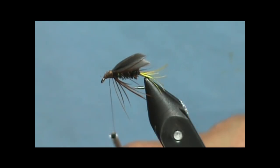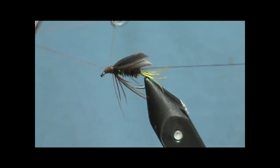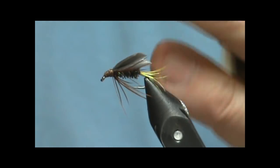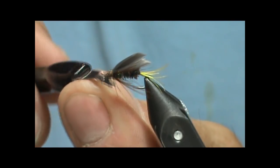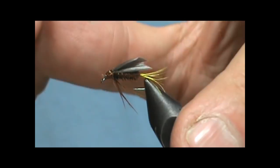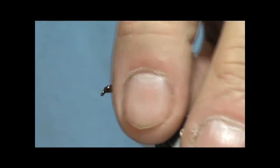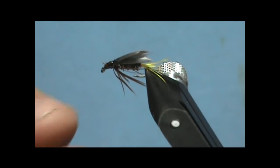Take our whip finish tool and give that the whip finish. Put a little bit of head cement on there. And here we have a fancy Prince wet fly.